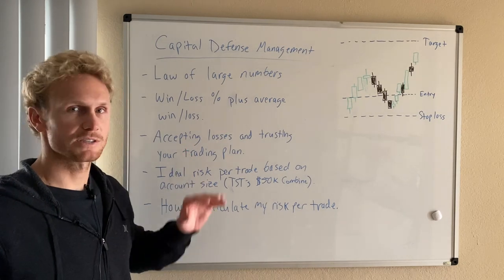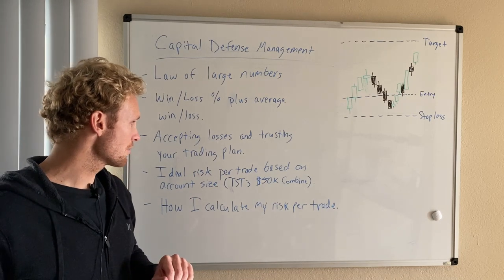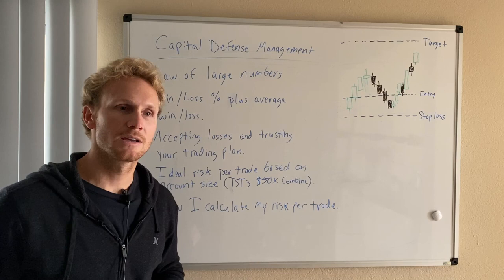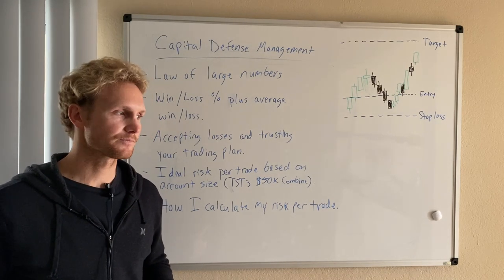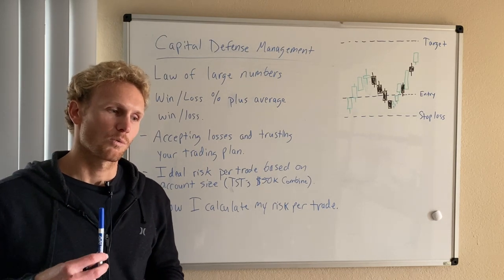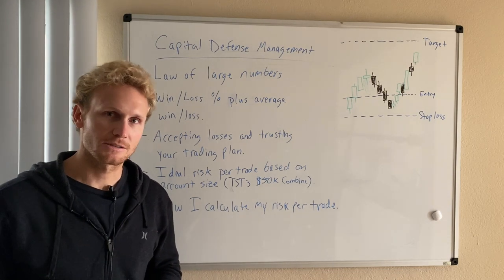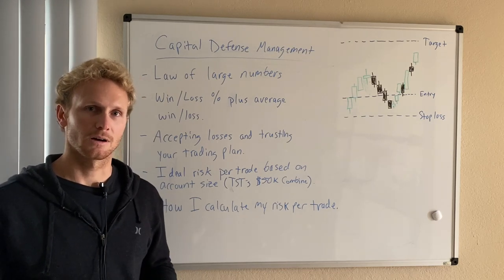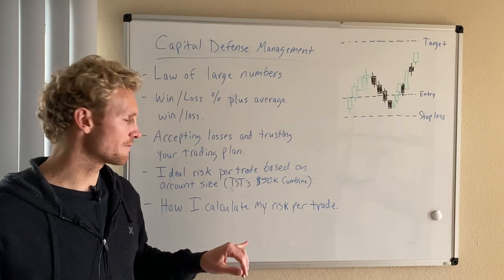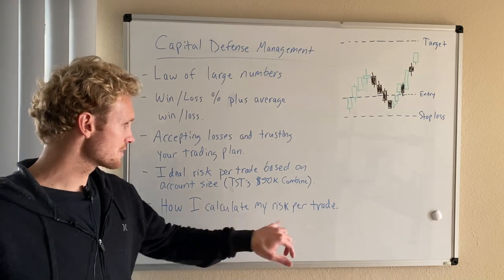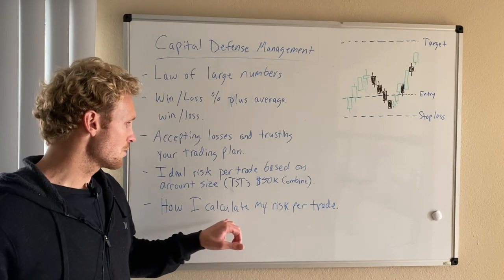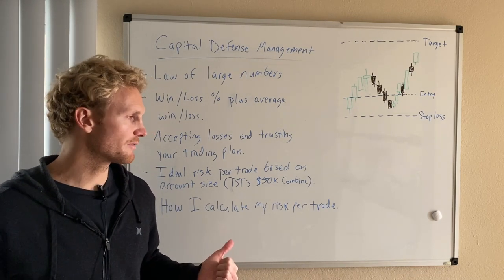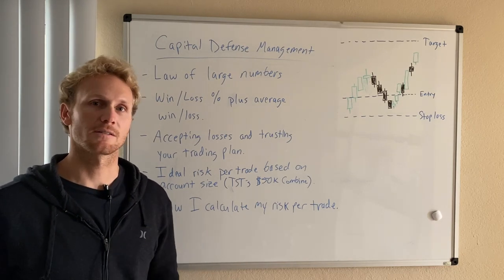The last two points are more hands-on — how to calculate the risk for the account size. I'll specifically talk about TopStep Trader's fifty thousand dollar combine, going into a risk management plan I used in the past to get funded. I'll cover the number of contracts to use based on current balance, the stop loss, how many losses you should allow yourself, and then I'll talk about my capital defense calculator. There's a lot of information here, so let's jump right in.